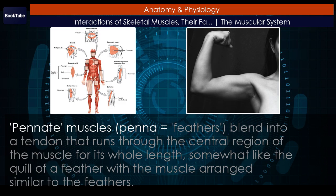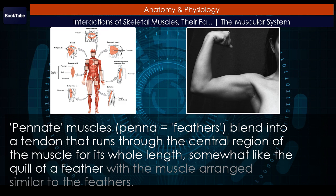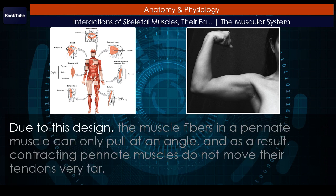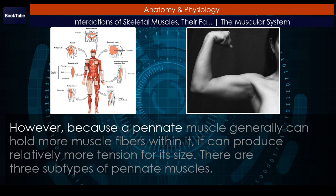Pennate muscles — 'penna' meaning feathers — blend into a tendon that runs through the central region of the muscle for its whole length, somewhat like the quill of a feather with the muscle arranged similar to the feathers. Due to this design, the muscle fibers in a pennate muscle can only pull at an angle, and as a result, contracting pennate muscles do not move their tendons very far. However, because a pennate muscle generally can hold more muscle fibers within it, it can produce relatively more tension for its size.